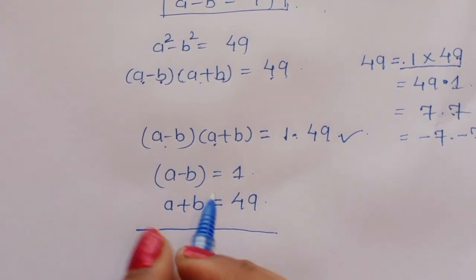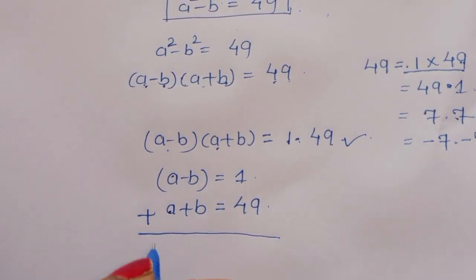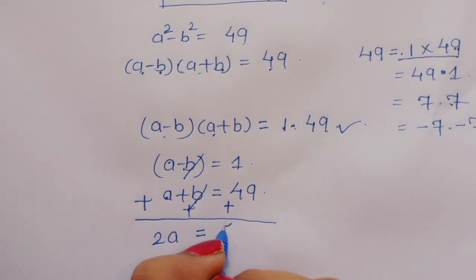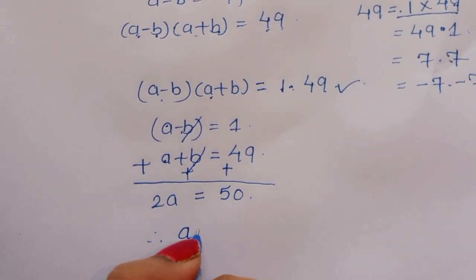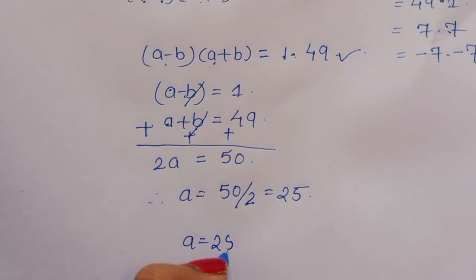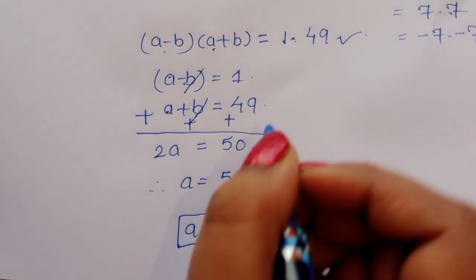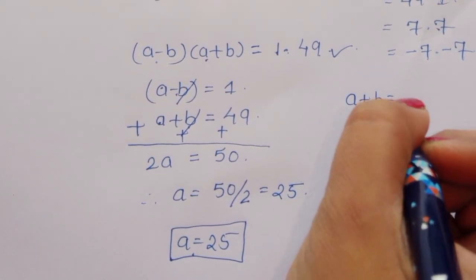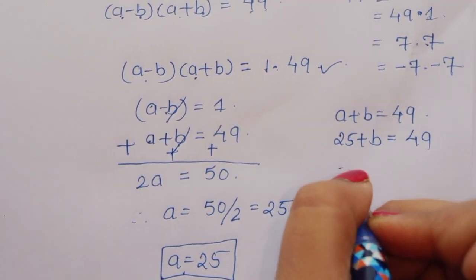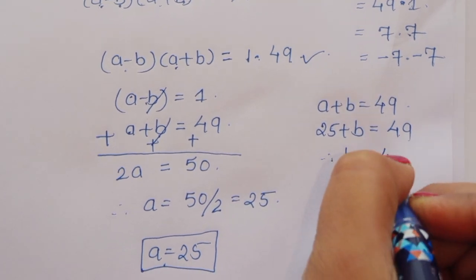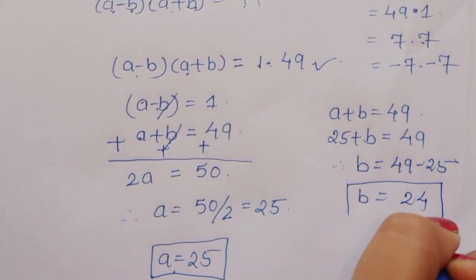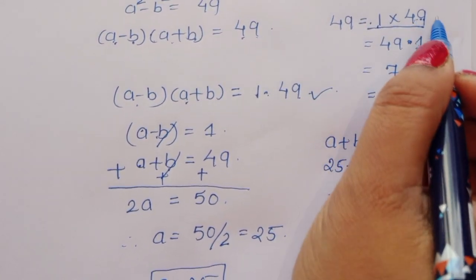Now we add the two equations: a plus a gives 2a, and minus b plus b cancels, equal to 49 plus 1, which is 50. Therefore a equals 50 divided by 2, so a equals 25. Now for b: a plus b equals 49, and substituting a equals 25 gives 25 plus b equals 49. Therefore b equals 49 minus 25, so b equals 24. This is the solution for Case 1 (1 times 49).